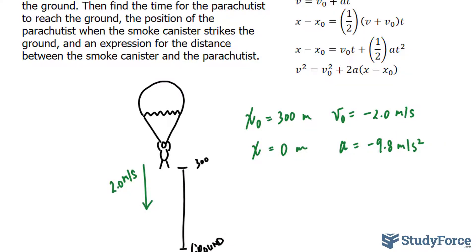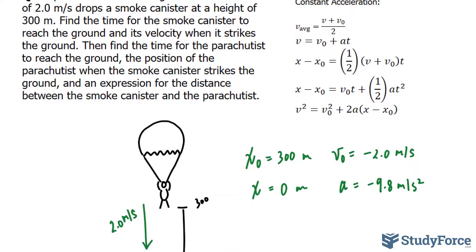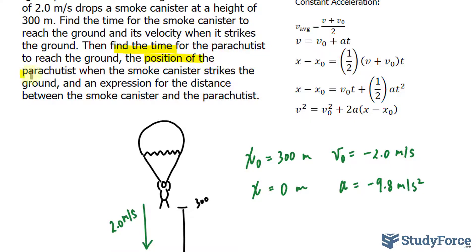Now let's note what they want us to answer. First and foremost, we need to find the time for the smoke canister to reach the ground and its velocity when it strikes the ground. Furthermore, they want us to find the time for the parachutist to reach the ground, the position of the parachutist, and the expression for the distance between the smoke canister and the parachutist.